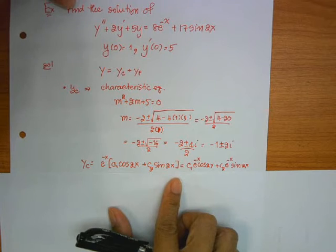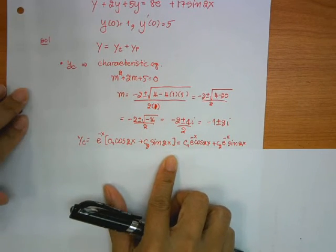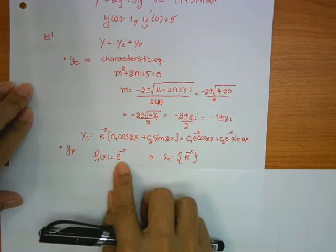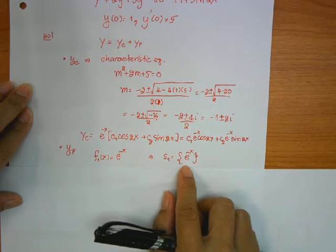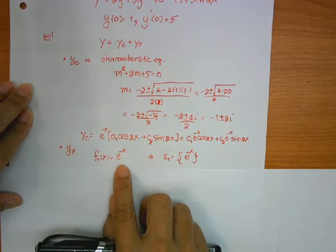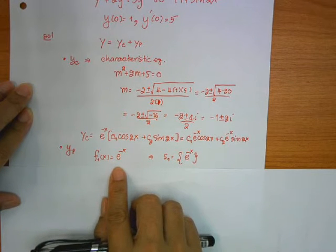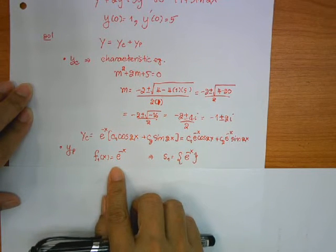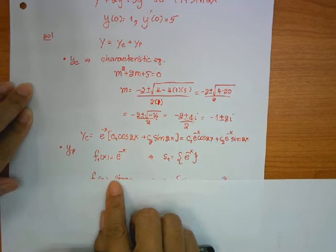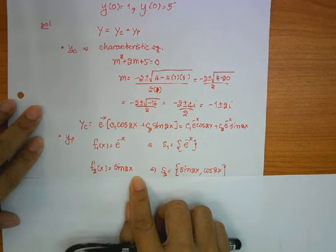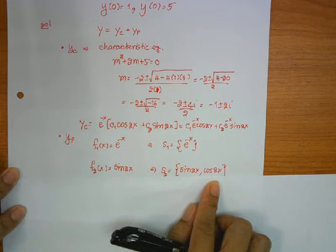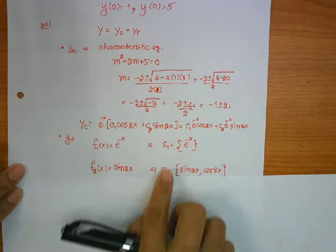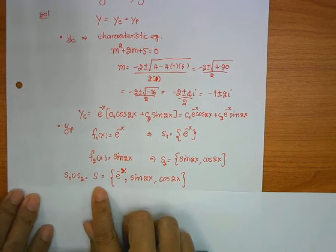Now we are going to find yp. The first function is exponential of minus x, and the UC set of exponential of minus x is just exponential of minus x, because no matter how many derivatives you take, you get only one function. Function 2 is sine 2x: the derivative of sine gives cosine, and the derivative of cosine gives sine, so the UC set has two functions: sine 2x and cosine 2x. Taking the union of these two sets gives the full UC set for f(x).